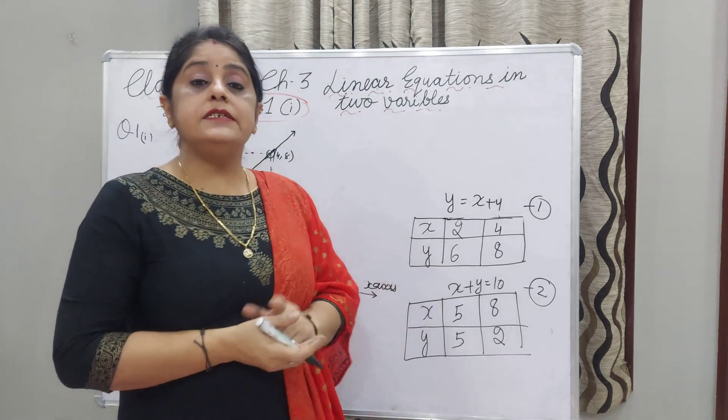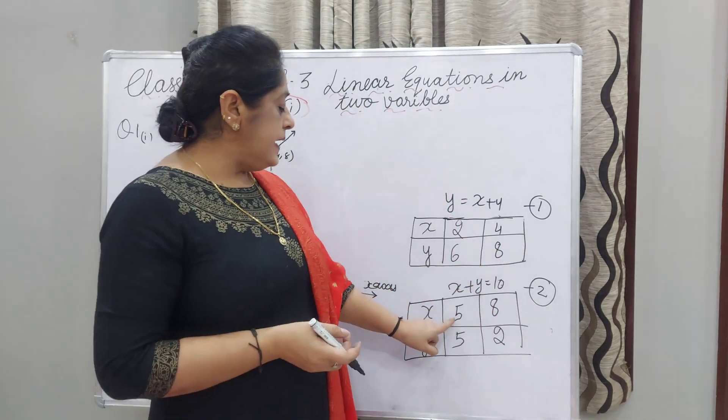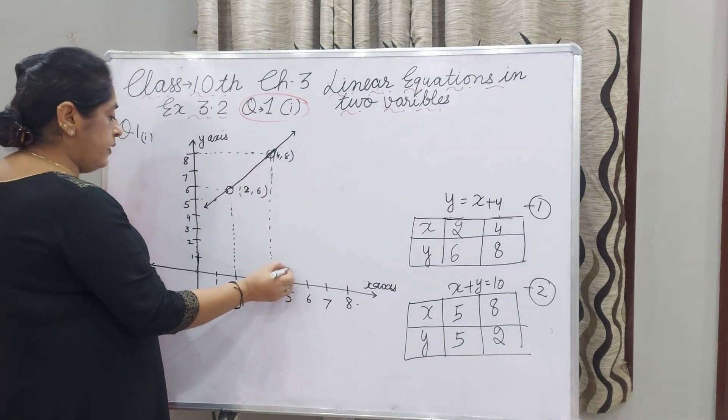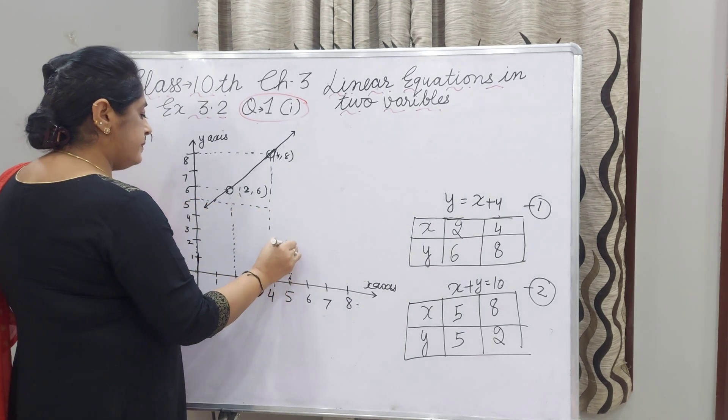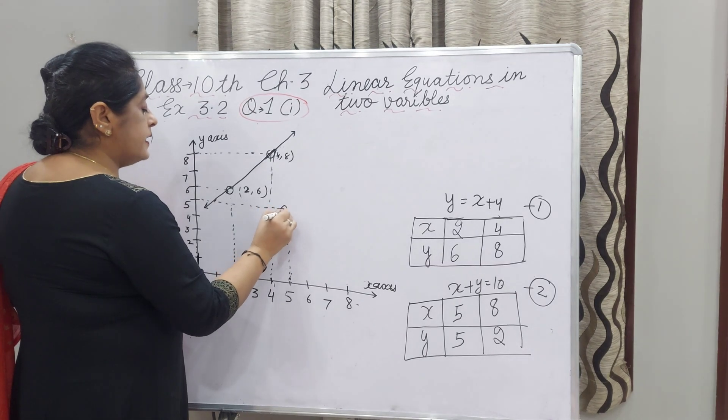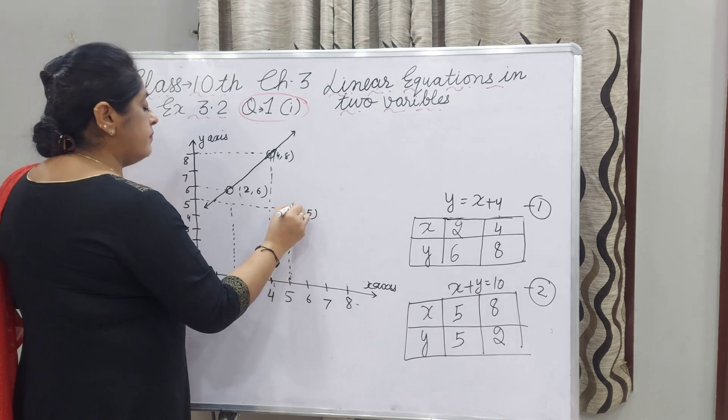Now for the second equation, X plus Y equals 10. Our first point is X equals 5 and Y equals 5. Here I get the point where X is 5 and Y is also 5.